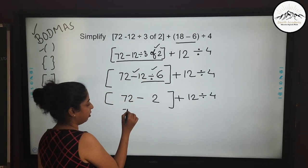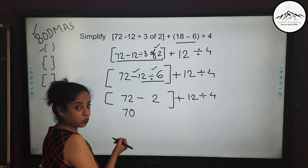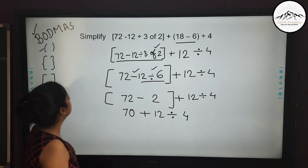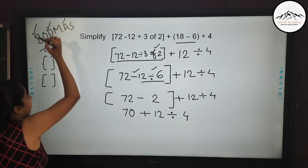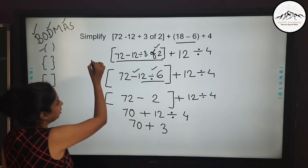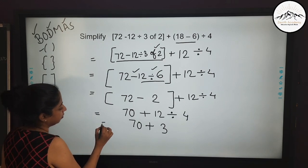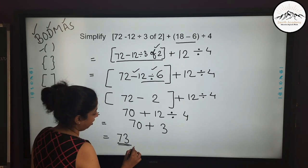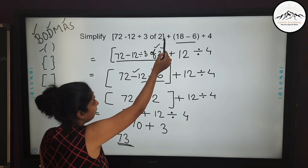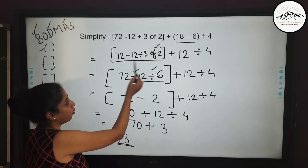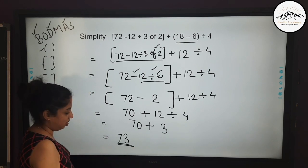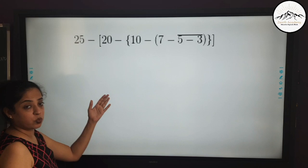72 minus 2 is 70. Now we have one term so we can eliminate the square bracket. Bring down: 70 plus 12 divided by 4. There is addition and division, and division comes first. So 12 divided by 4 is 3. Now we have 70 plus 3, which equals 73. The final answer is 73. We eliminated the simple bracket first, then worked through the square bracket following BODMAS, then handled the remaining division before addition.